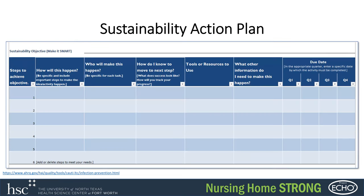There is also a sustainability action plan that is another action planning element. Based on your assessment results, you want to identify which areas you'll focus on and what the need is within those domains — for example, environmental support or strategic planning. You'll want to start by developing SMART goals, which will really help guide your sustainability planning.